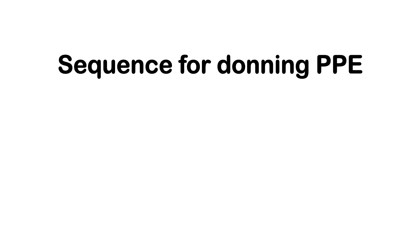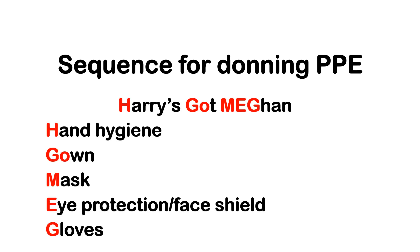What is the correct sequence for donning or wearing PPE? Remember the acronym: Harry, Gown, Mask, Prince Harry and Megan Markle. That is: hand hygiene, followed by gown, followed by mask, then eye protection or face shield, and gloves.